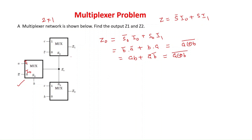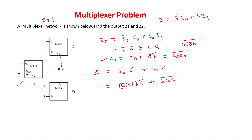Z1 and Z2 are the outputs of the circuit, and Z0 acts as the select line to the next two multiplexers. For Z1: Z1 = S0'·I0 + S0·I1, where I0 = C' and I1 = 1. Substituting S0 = Z0 = A XNOR B, we get Z1 = (A XNOR B)'·C' + (A XNOR B)·C, which simplifies to Z1 = A XNOR B XNOR C.